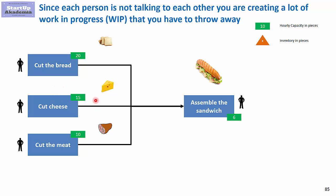We can cut cheese for 15 per hour, but we can assemble only six, and the same goes for meat — the capacity to cut meat is bigger than assembly. So if those processes don't speak to each other — if cutting bread doesn't speak to assembling the sandwich — you will have a situation where, per hour, a lot of inventory will occur. After one hour, we will have excess cut bread that will never be used because the throughput at assembly is much smaller than at cutting.